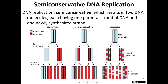DNA replication is a semi-conservative process. What that means is that when the parent strands come apart for new nucleotides to come in, producing a new strand of DNA, the new daughter strand stays with one of the older parent strands. Once that new daughter strand is fully produced, they wind up forming the double helix together. That's why it's called semi-conservative — one old strand with one new strand.